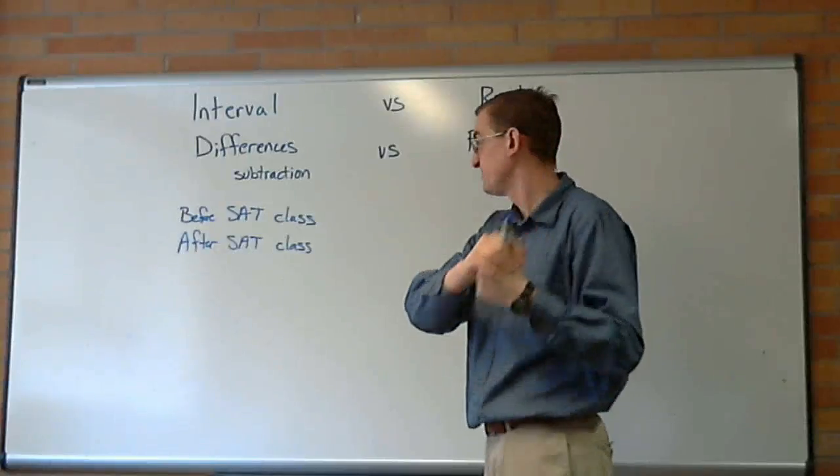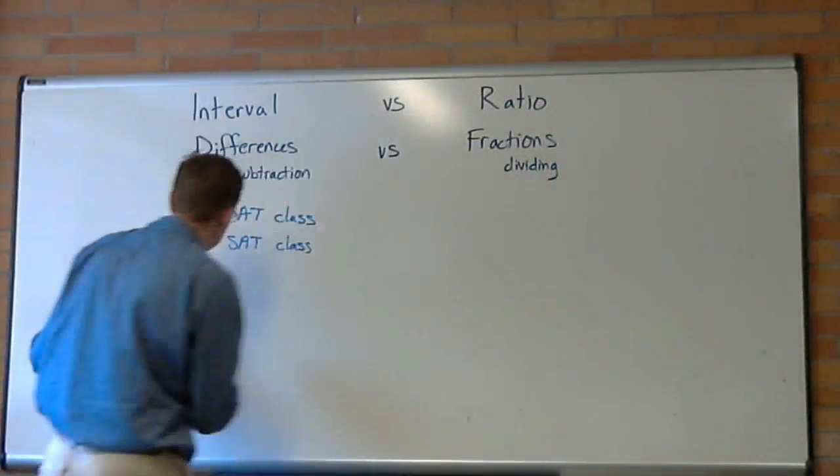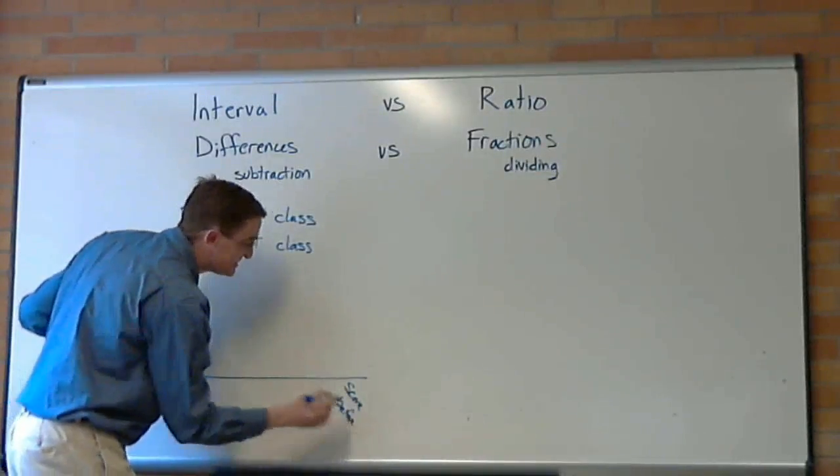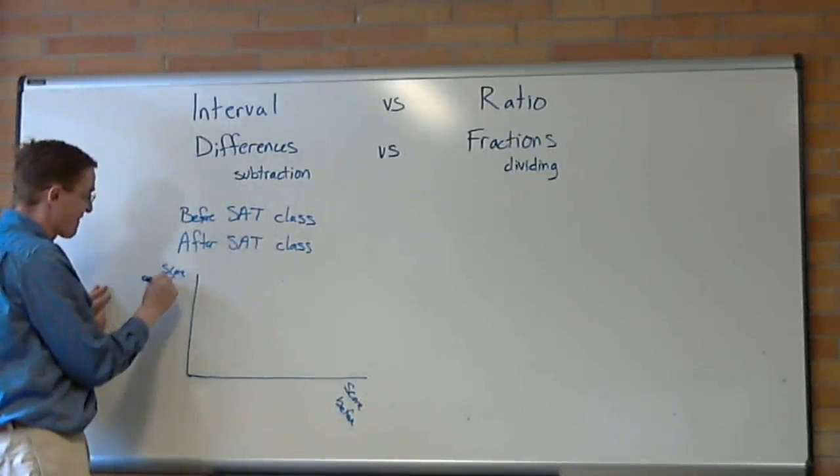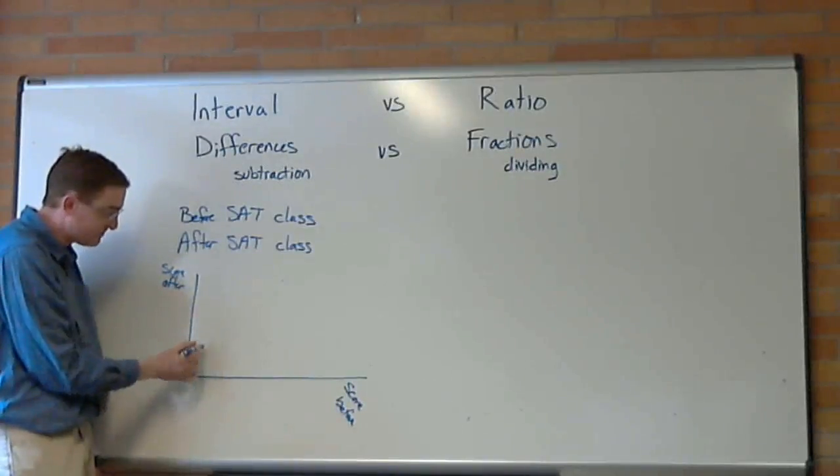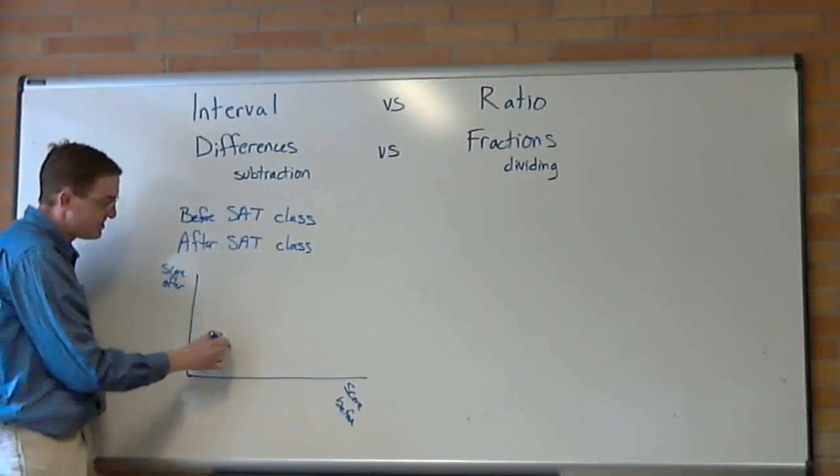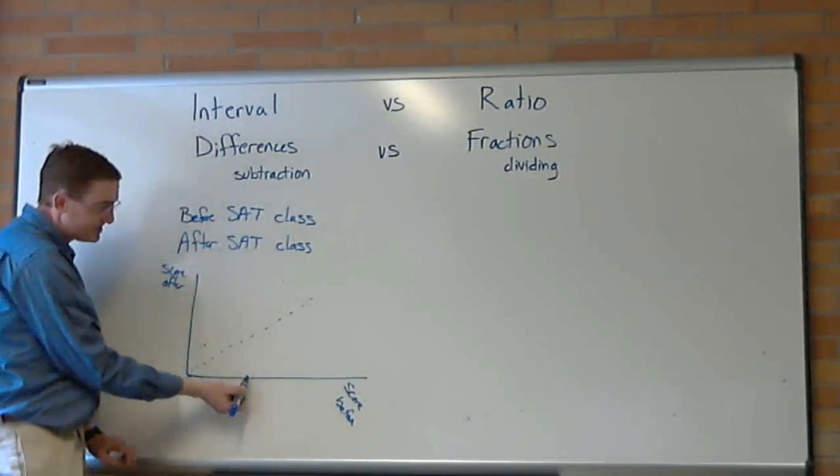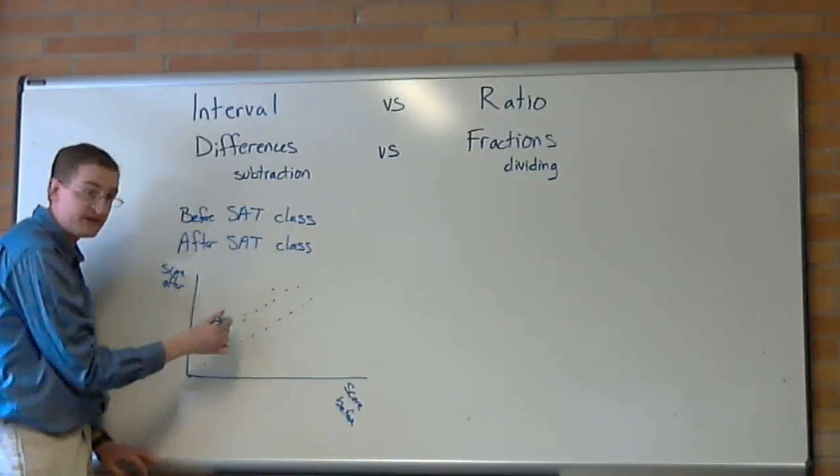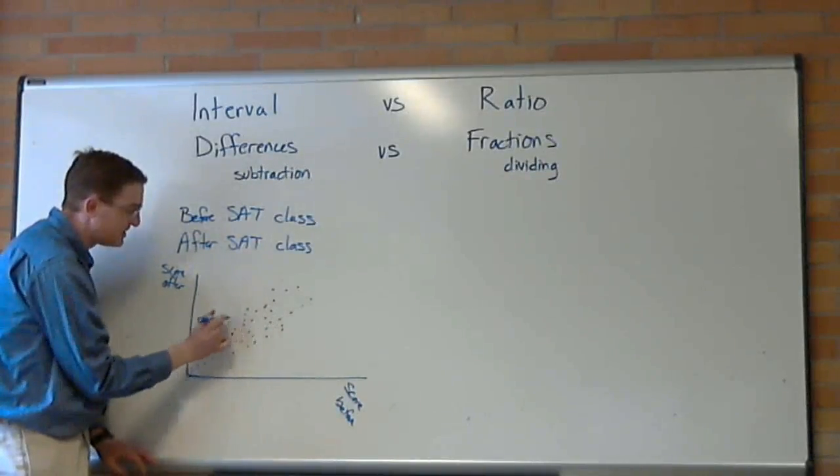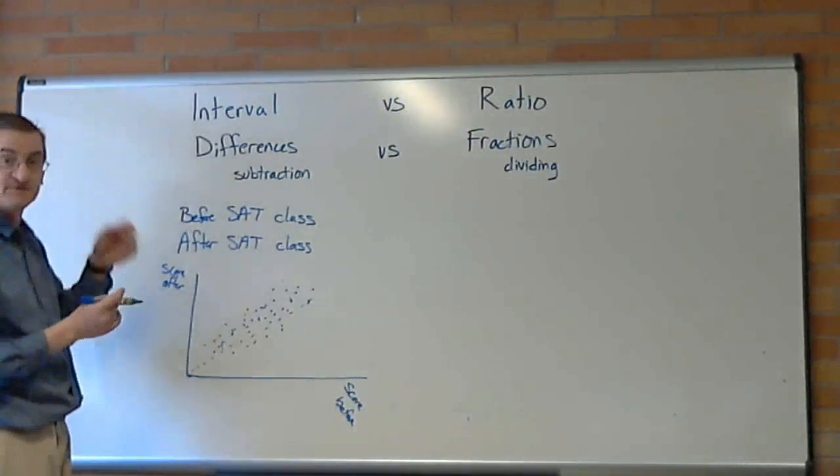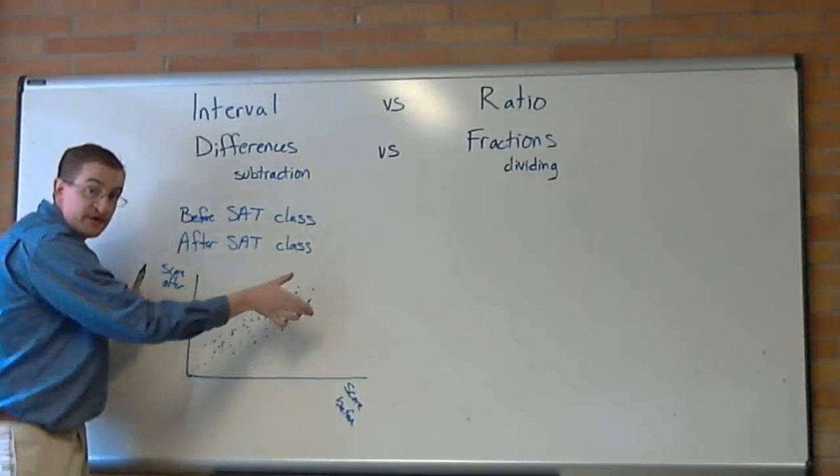If we were to graph this data, what would it look like? Let's put on this axis the scores they got before, and let's put on this axis the scores they're getting after. So this student did really bad before, and after hopefully they did a little better. So here's kind of the line that says they stayed the same. This student did okay before, and after the class they did a little better. So most of our dots are going to be above the line, but occasionally we're going to get some dots below the line. So here's the kind of picture that we would see with interval data. We see a swath of data following some line.